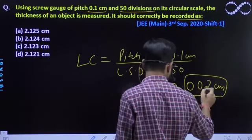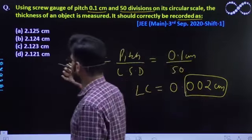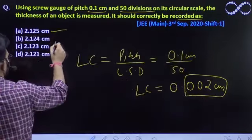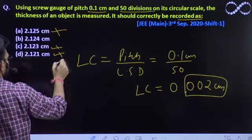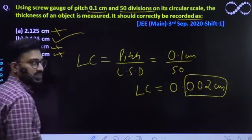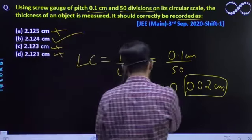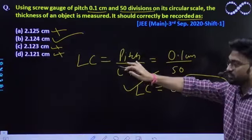Toh dekh lete hai, kya end mein two hai, toh multiple of two hona chahiye, these all terms are odd. Theek hai? So, only, jo humaara correct option would be B. Toh B humaara correct option hona chahiye ki, ki jo bhi reading least count ke multiples mein hona chahiye, hai na.